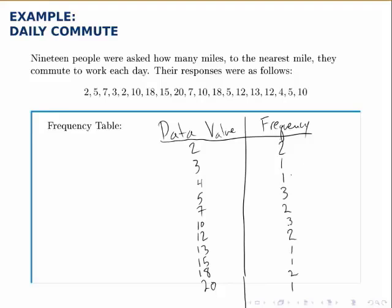We fill in the rest of the table the same way. A quick check: add up all the frequencies — they should sum to the total number of data points. Here, adding up the frequencies gives a total of 19, which matches.